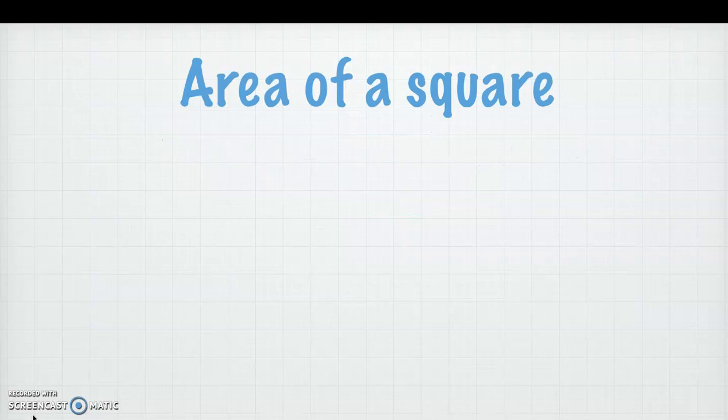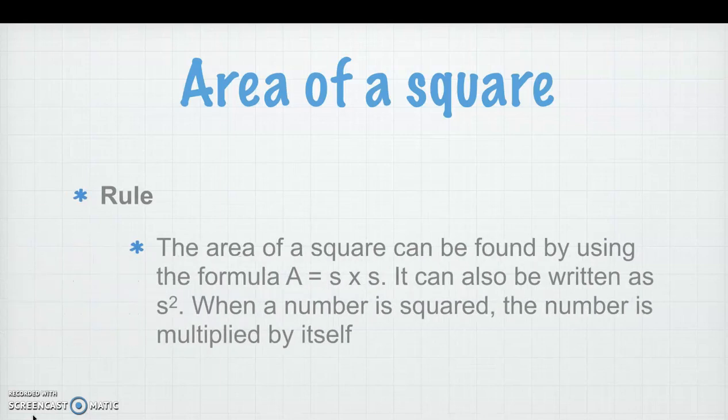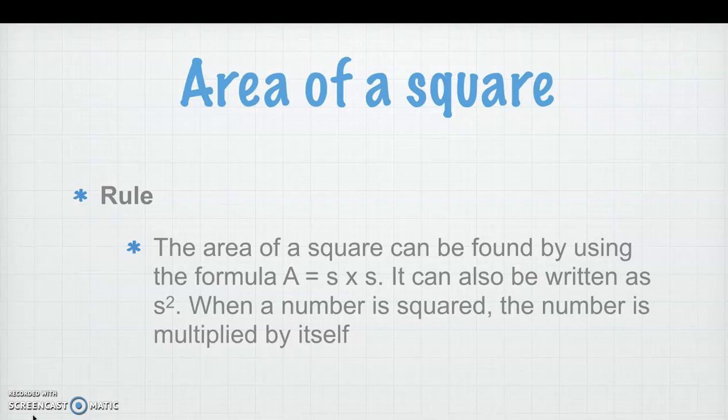So going to our lesson right away, we have to know what is the rule to find the area of a square. The rule says the area of a square can be found by using the formula A equals S times S. So A equals S times S.